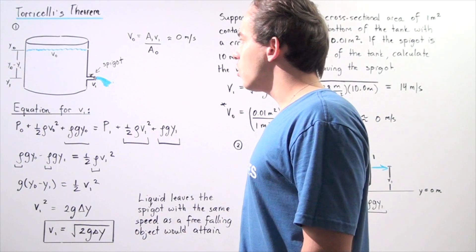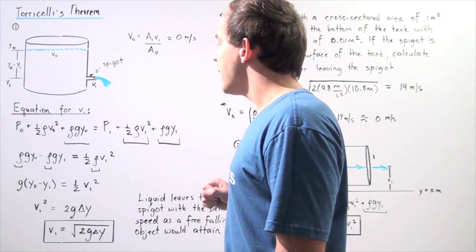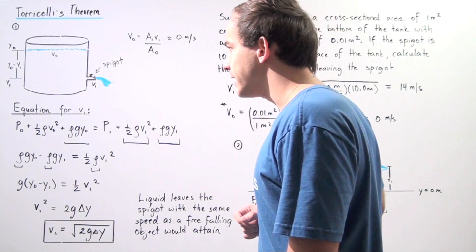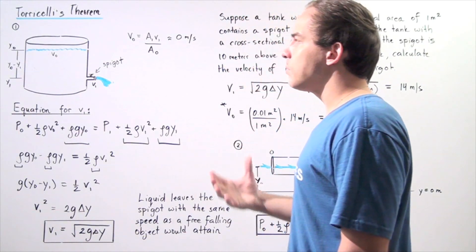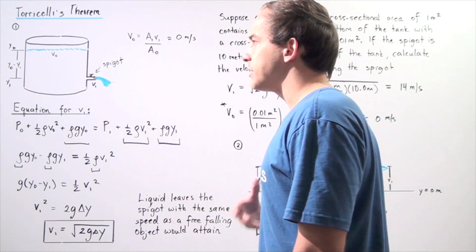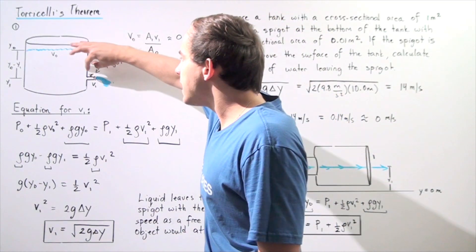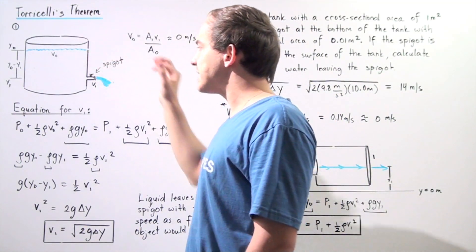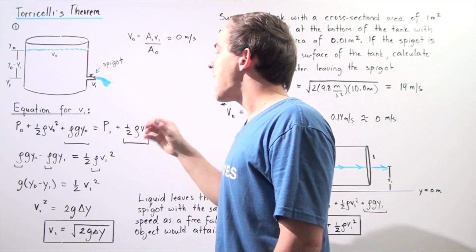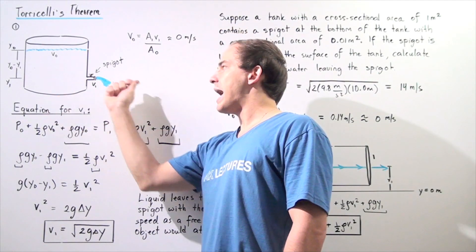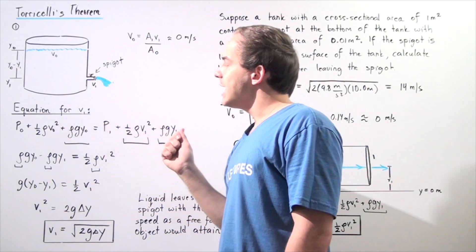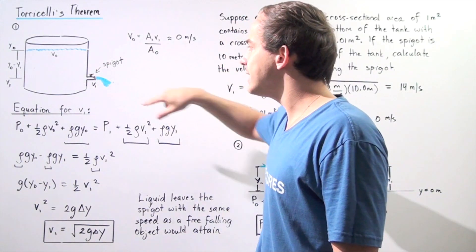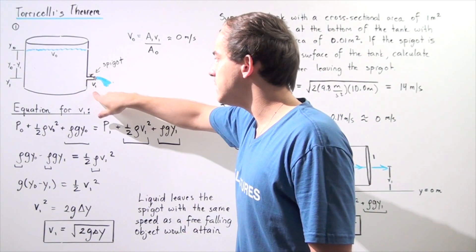Suppose we have a tank with a spigot at the bottom. We fill the tank with a fluid and open the spigot. At the moment we open it, the fluid begins to flow out, and the velocity of the fluid coming out of the spigot is given by V1.